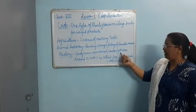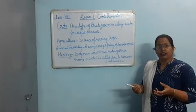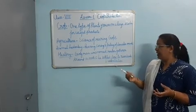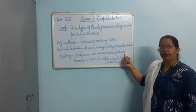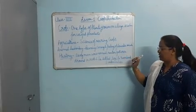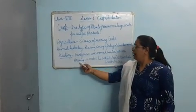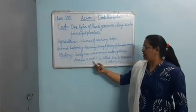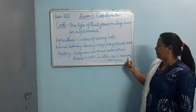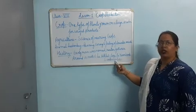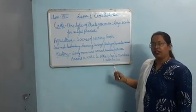Early man was also a gatherer — he collected seeds, fruits, and similar things and used them as food or other resources. But around 10,000 BC, he settled close to river banks and water bodies.